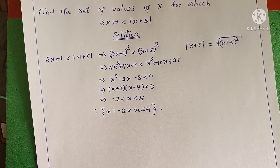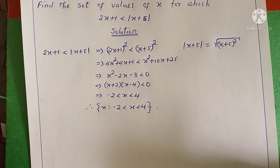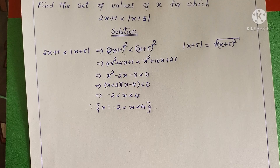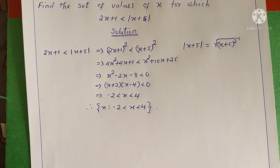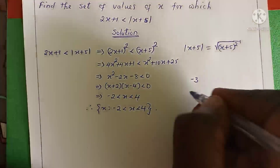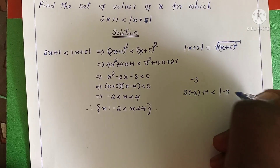Now, is this solution correct? Remember, whenever you are asked to find the set of values for which a given inequality is satisfied, you are looking for that subset of real numbers that satisfies the given inequality. No other value should satisfy it if it is not in your solution. Let me pick a number not in this solution set to verify — I'll pick negative 3. Substituting into the inequality: 2(-3) + 1 < |(-3) + 5|.